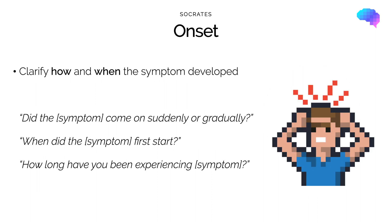The next part of SOCRATES is Onset. Here we want to clarify how and when the symptom developed. You could ask questions such as: did the symptom come on suddenly or gradually? When did the symptom first start? How long have you been experiencing the symptom? It's really important in your history of presenting complaint to establish a clear timeline for each symptom.